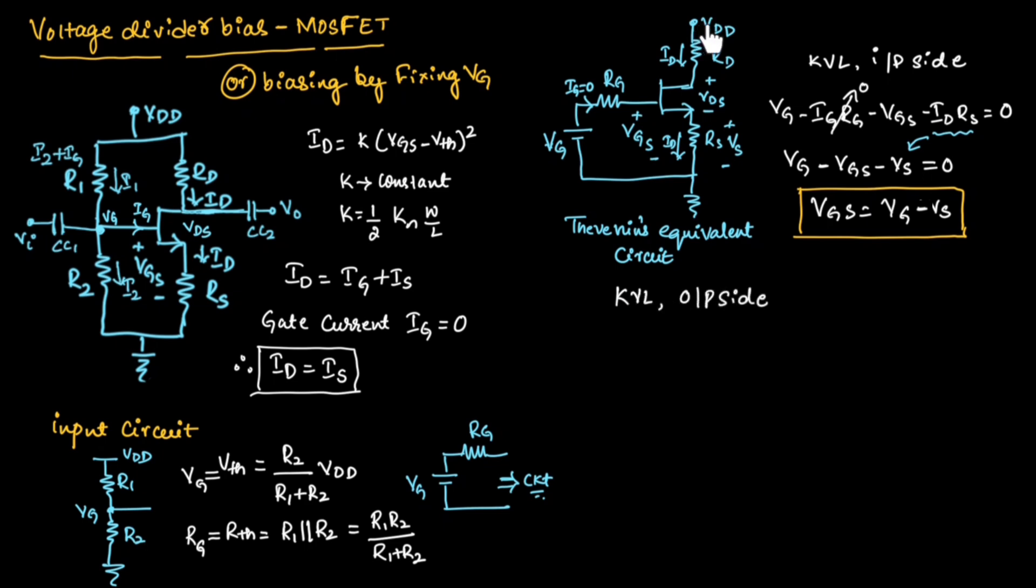Now if we apply KVL to output side, we can write Vdd minus Id Rd minus Vds minus Id Rs equals 0. If we take Id as common from these two terms, we can write Vdd minus Vds minus Id into Rd plus Rs equals 0.